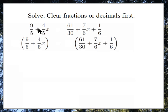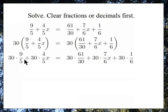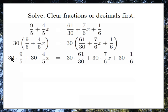Multiplying by 30 will get rid of the fractions. When I distribute, both this term and this term are multiplied by 30, and this term, this term, and this term are all multiplied by 30. Now when I get to 30 times 9/5 — since this means 9 divided by 5 — I can divide the 30 by 5, which gives me 6, and then 6 times 9 is 54. So that's what I have there.